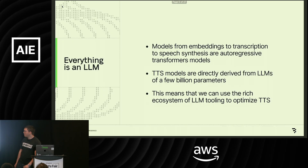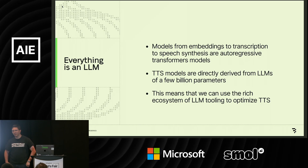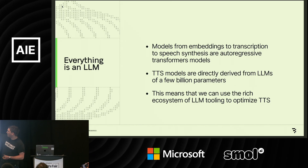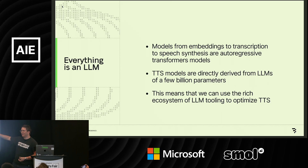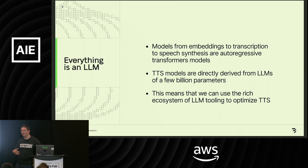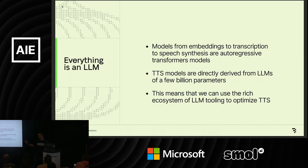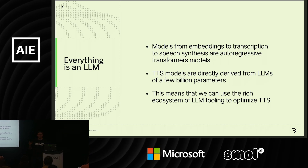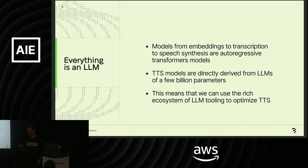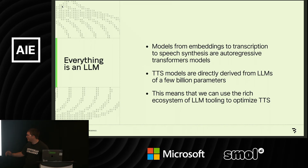On architecture — this is something I've been learning this year that's made life a lot simpler at the runtime level. The useful but not entirely accurate framing is: everything is an LLM. There are really two types of models: autoregressive transformer models that are LLM or very LLM-adjacent — you see this in embeddings, transcription with Whisper, and TTS — and then the diffusion-style image models, which are a very different optimization problem. Because TTS models are so architecturally similar to LLMs, we can access the rich ecosystem of LLM tooling to make TTS models better.